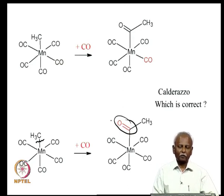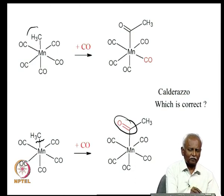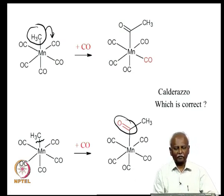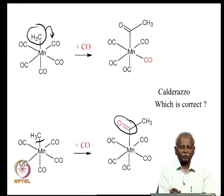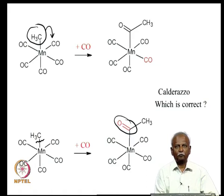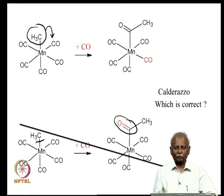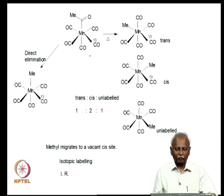First, the methyl group actually migrates onto the carbon monoxide and a vacant site is generated. On this vacant site, carbon monoxide is capping the vacant site, and as a result we have an octahedral complex again. Calderazzo, through isotopic labelling experiments, showed clearly that the methyl group is migrating to a carbon monoxide and generating an acetyl group, and the incoming carbon monoxide is merely filling up a vacant coordination site.